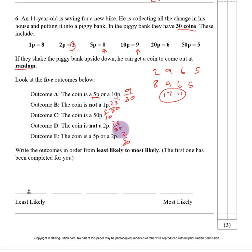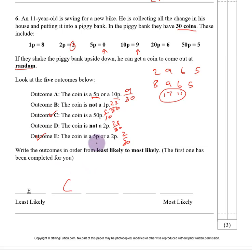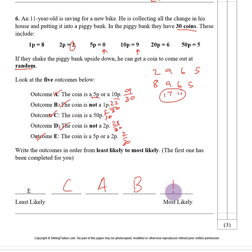Now it is easy to order from least to most likely. E is 2 out of 30 — least likely. Then C at 5 out of 30. Then A at 9 out of 30. Then B at 22 out of 30. And finally D at 28 out of 30 — most likely.